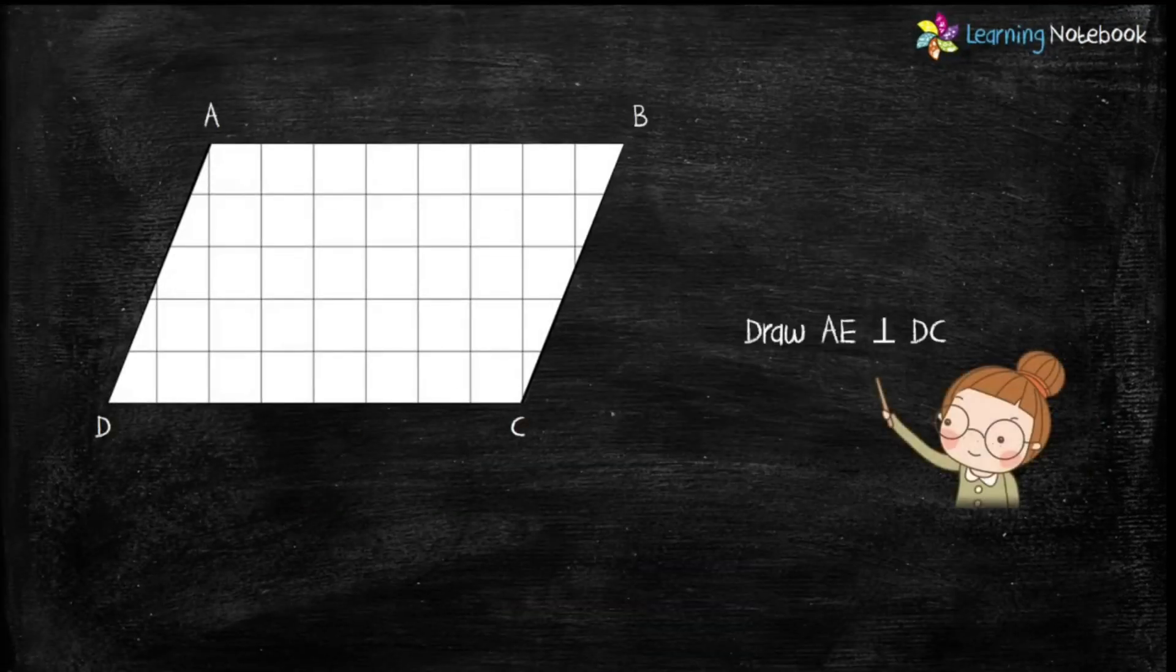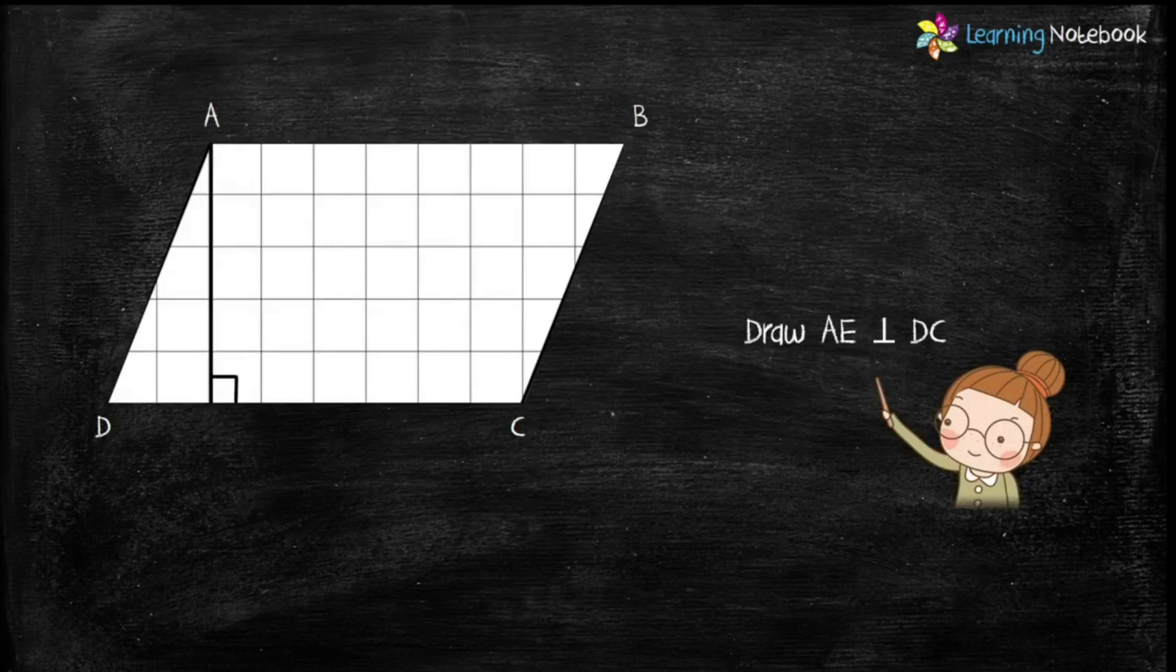Now students, using grid lines, draw a perpendicular AE on BC.